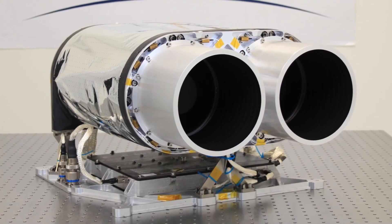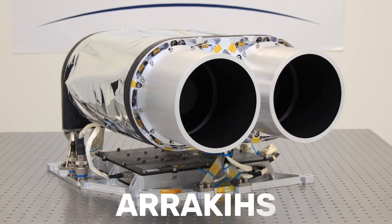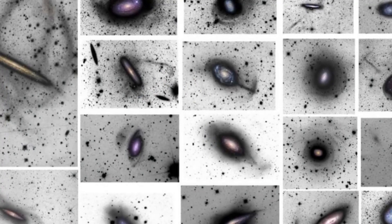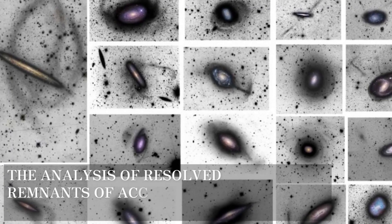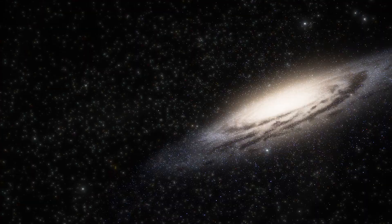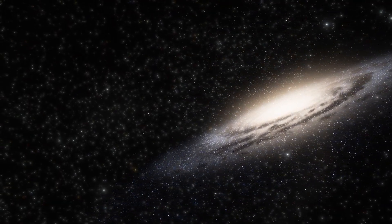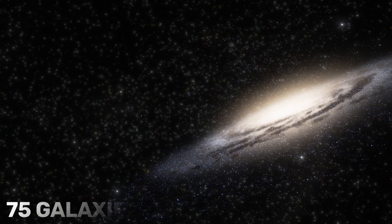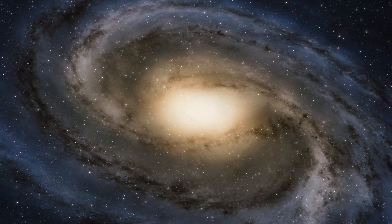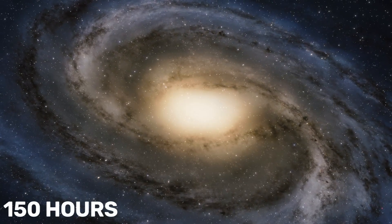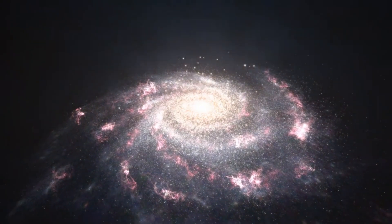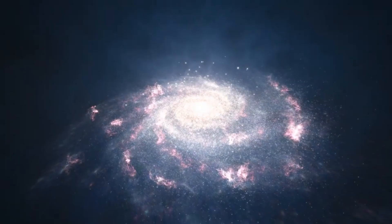Additionally, the European Space Agency has approved a new mission called Arrakis to launch a satellite into space in 2030. The acronym stands for the Analysis of Resolved Remnants of Accreted Galaxies as a Key Instrument for Halo Surveys. And just like the title says, Arrakis will observe the outer rims of 75 galaxies, much like our own Milky Way. It will look at every galaxy for a lengthy 150 hours, giving astronomers a detailed representation of the galaxy's halo structure, where dark matter tends to concentrate.